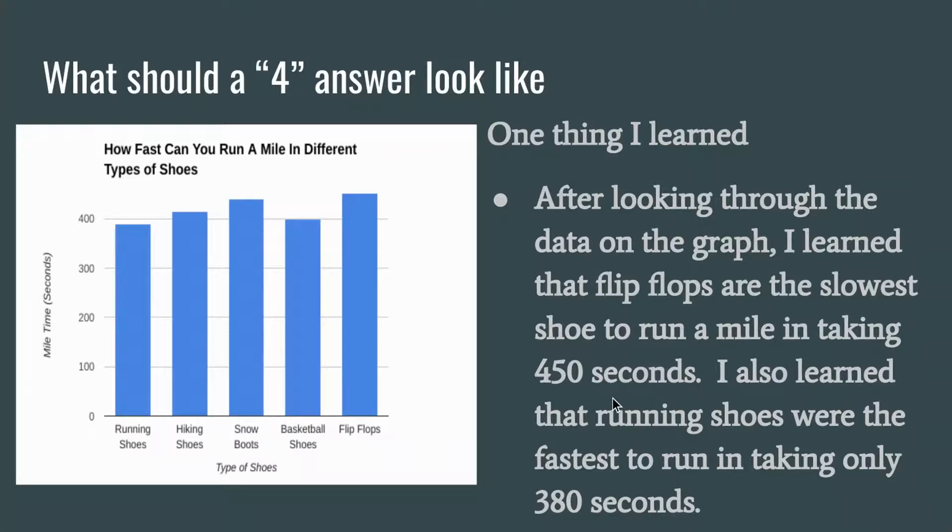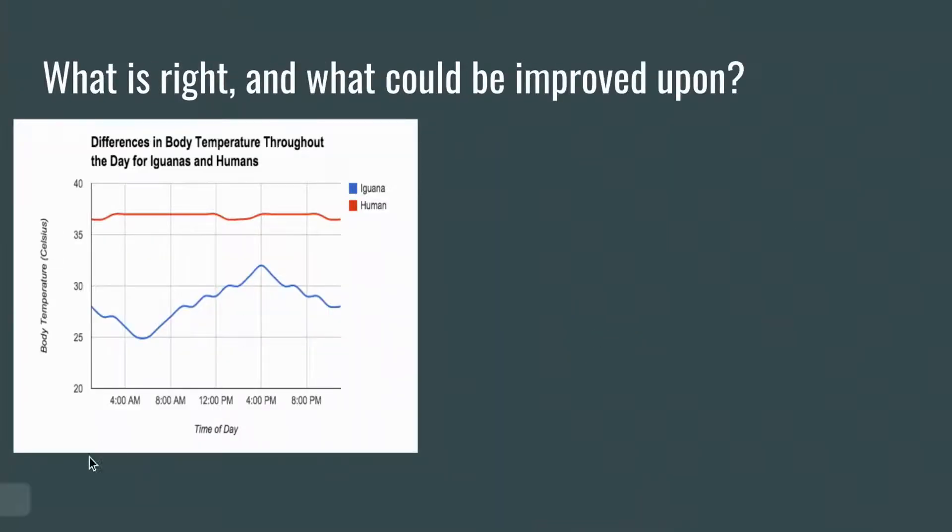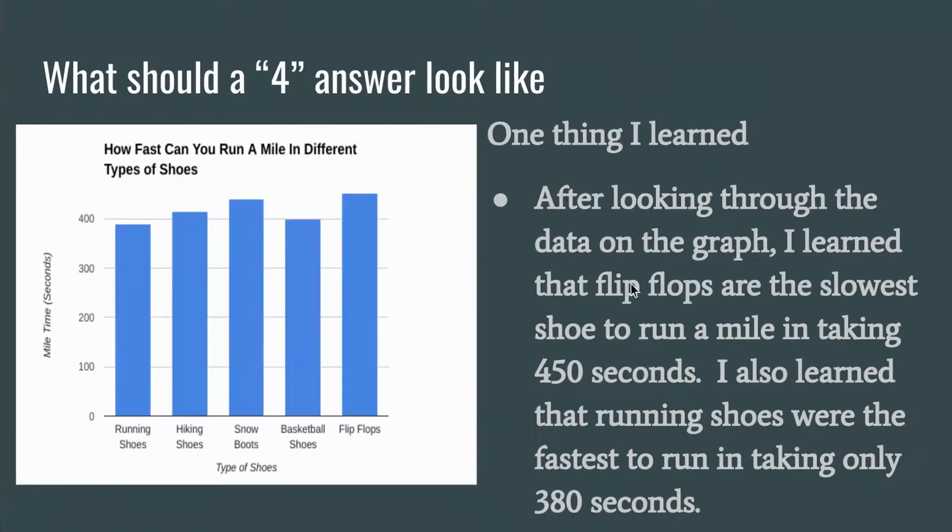So I want to point out a couple of things in this level four response that bring it to that level four data. If you were to just put after looking at the graph or the data on the graph, I learned that flip-flops are the slowest shoe, that's probably around a two or a three in my opinion. The thing that takes this up is addressing the actual numbers in the data. You don't just say that they're the slowest. I went on and added how long it took to actually run a mile in flip-flops by saying 450 seconds. I also then, to really bump it up to a level four, added a second fact.